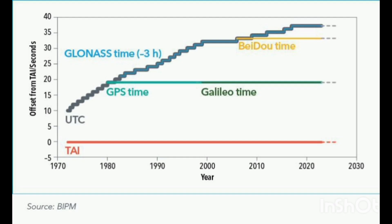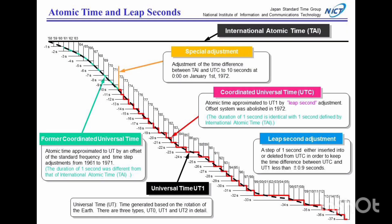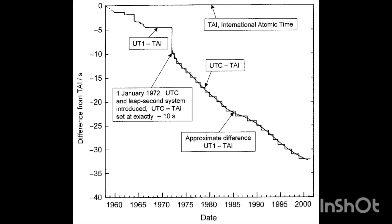In a controversial decision, signal frequencies were initially set to match the rate of UTC but then kept at the same frequency using atomic clocks. They were deliberately allowed to drift away from UTC; when the divergence grew significantly, the signal's phase was stepped by 20 milliseconds to bring it back into agreement with UTC.